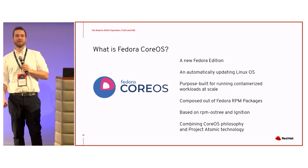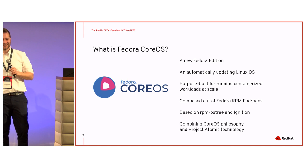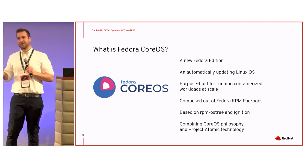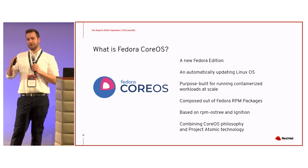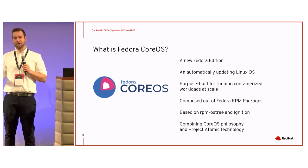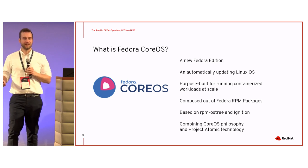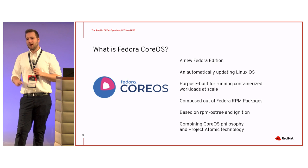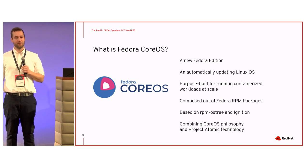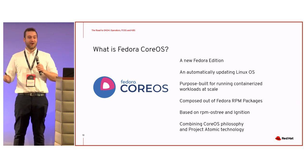Let me dive into what Ignition and RPM-OSTree are. Ignition is our declarative first-boot configuration system. We have a declarative config — the Ignition config specification — and on the very first boot after provisioning, it'll set up the system as needed: what cloud am I running in, what do I need to configure here? Ignition will do that on the very first boot. Then we take the same configuration and have it managed with an operator for day-two operations. This allows our clusters to run on autopilot with all the operators.